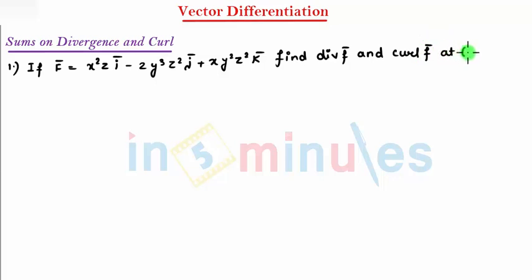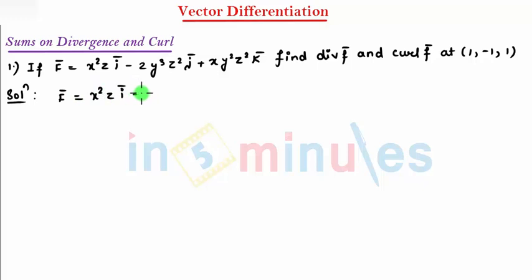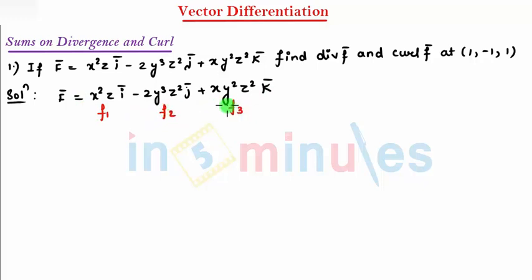We need to find this at the point (1, -1, 1). We have vector point function f̄ = x²z î minus 2y³z² ĵ plus xy²z² k̂. So I can say this is my f1, f2, and f3. Now while finding div, that is div of f̄, that is nothing but del dot f̄.